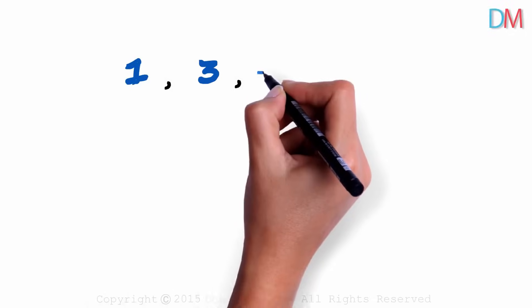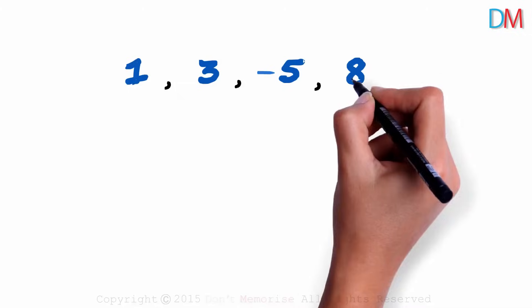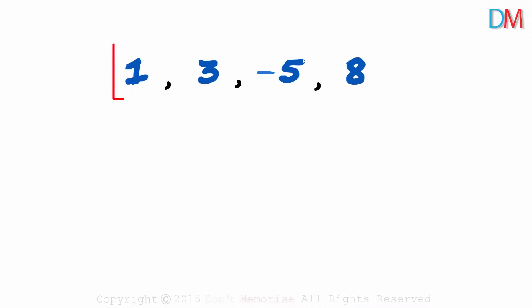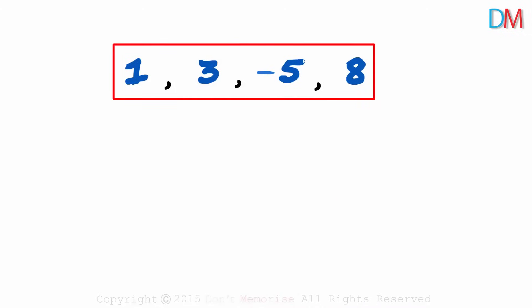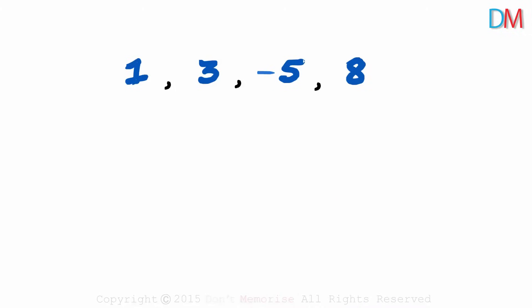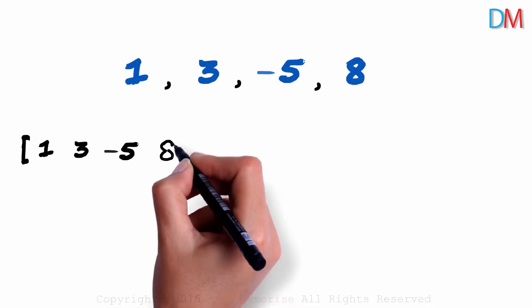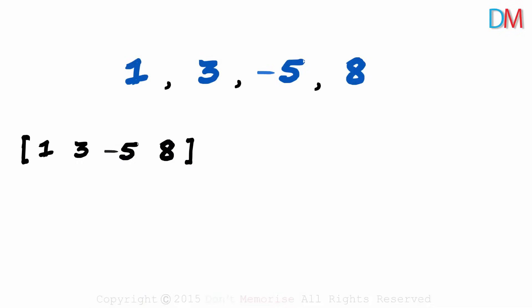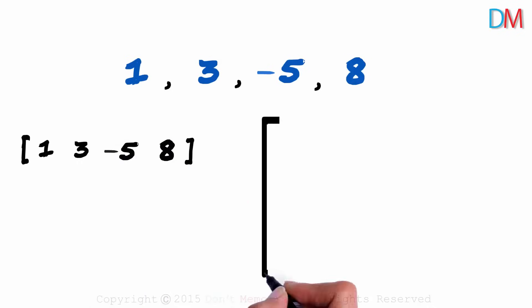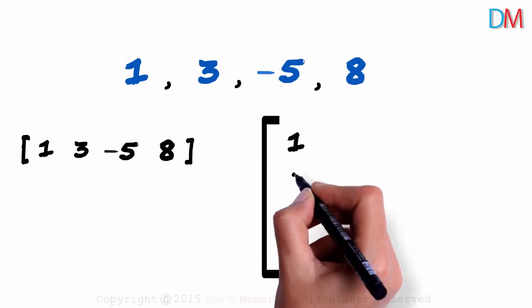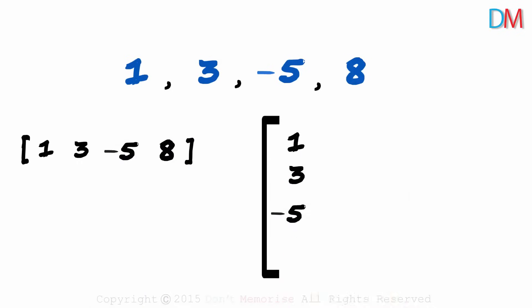1, 3, minus 5, and 8. This is just a row of four numbers and this can be represented in different ways. We can write it as an array of numbers horizontally like this. Or we can write it as an array of numbers vertically like this.